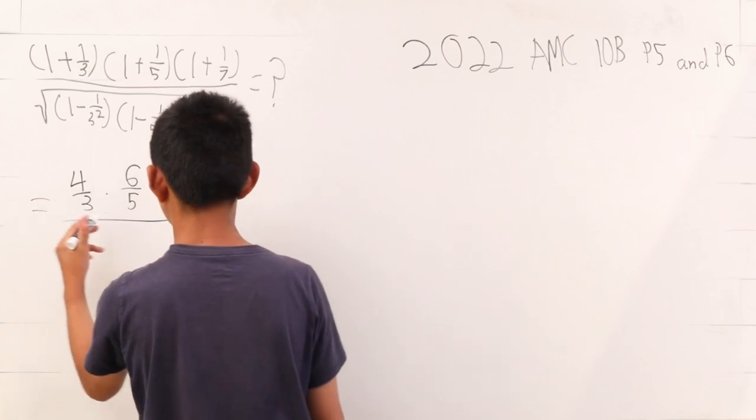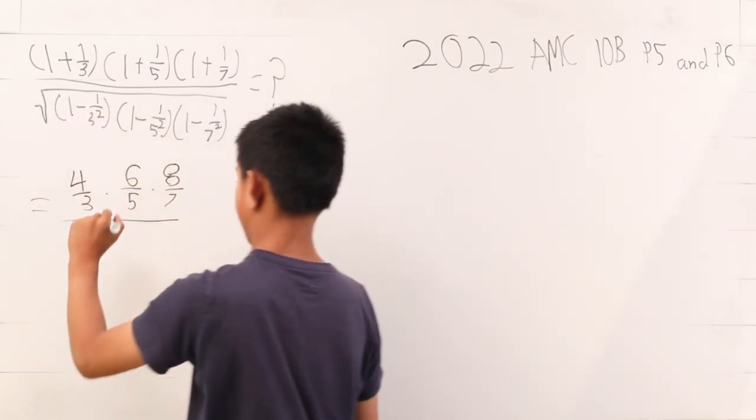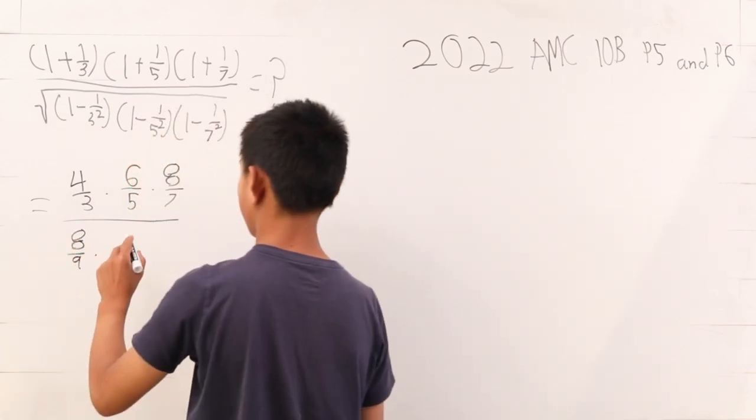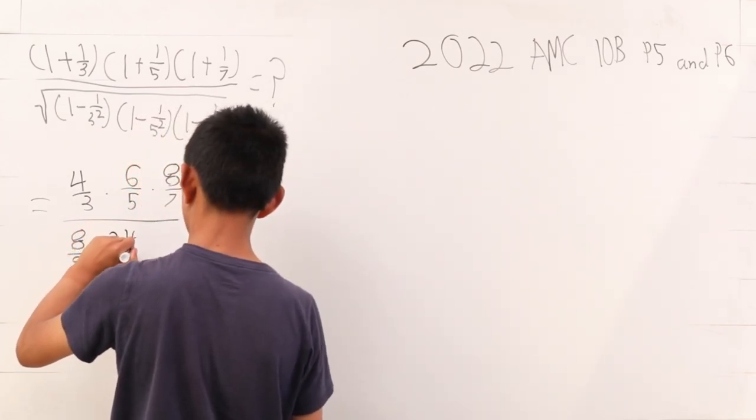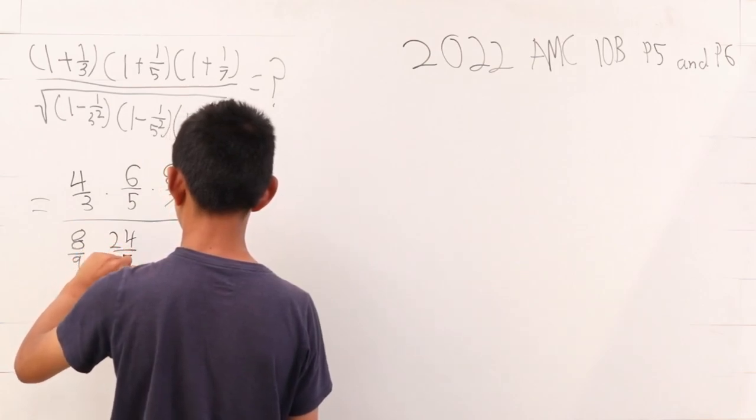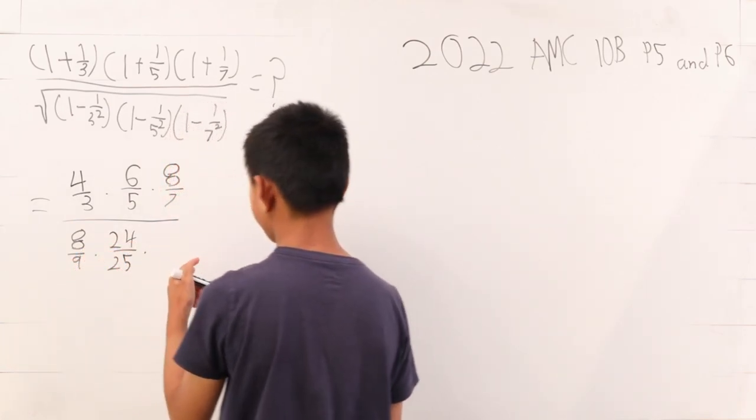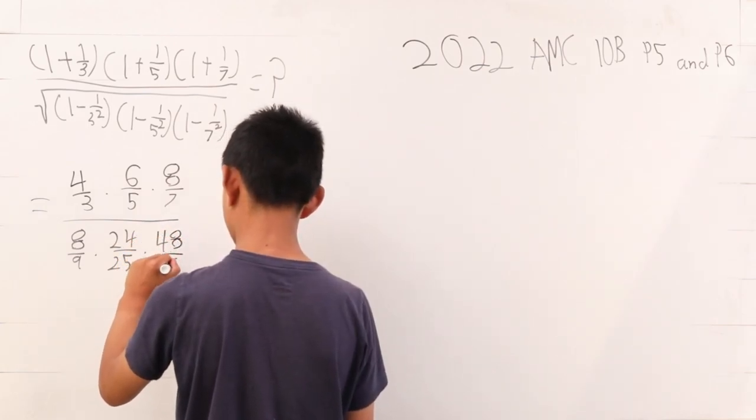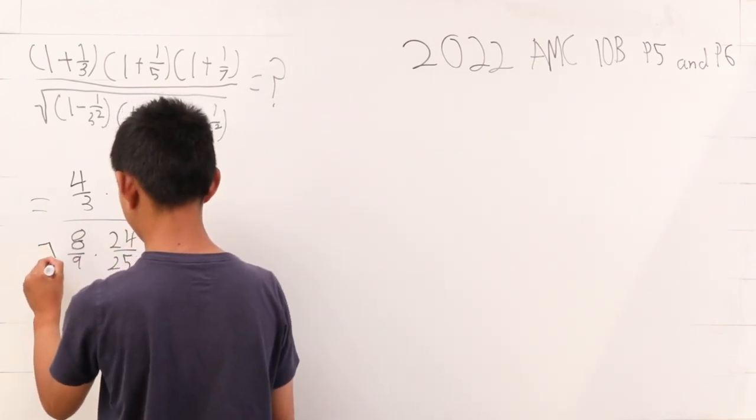And on the bottom, inside the square root, this here is 8/9 times 24/25 times 48/49. And we have to take the square root of that.